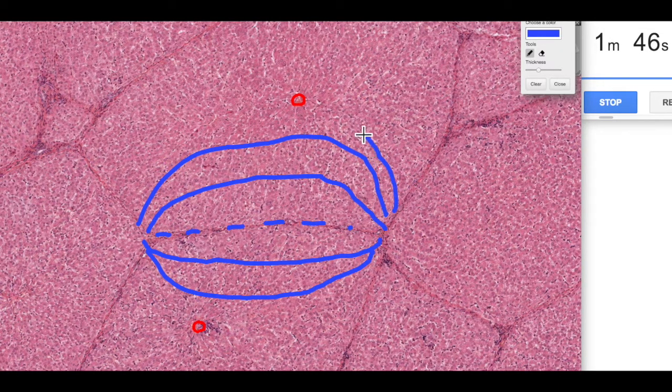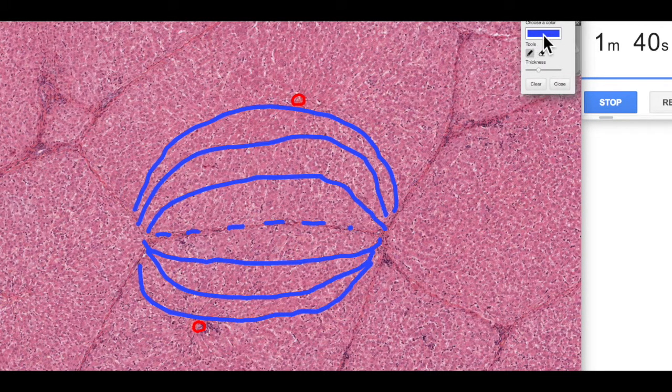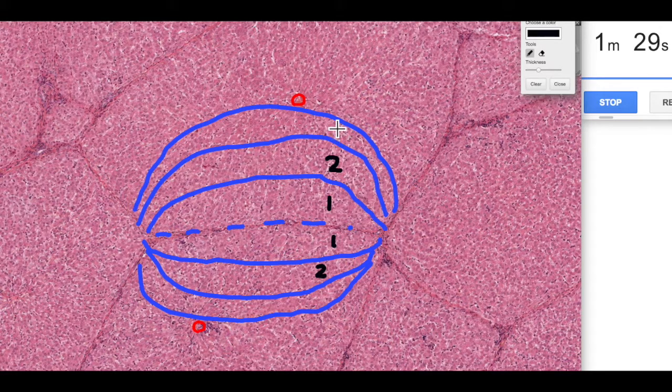I apologize for the drawing, I'm drawing with my mouse here. Hopefully you can get an idea. We've got zone one on either side, then we've got the intermediate zone two, and then we've got the outermost zone three.